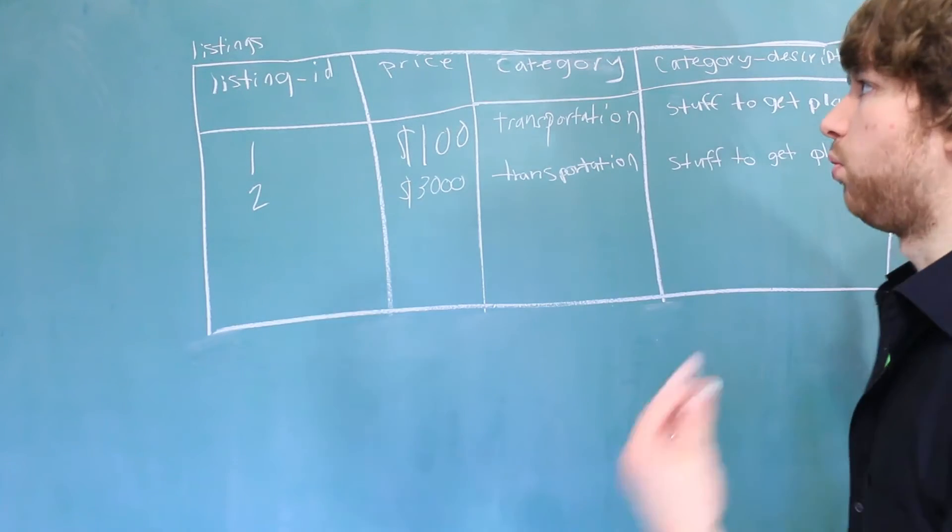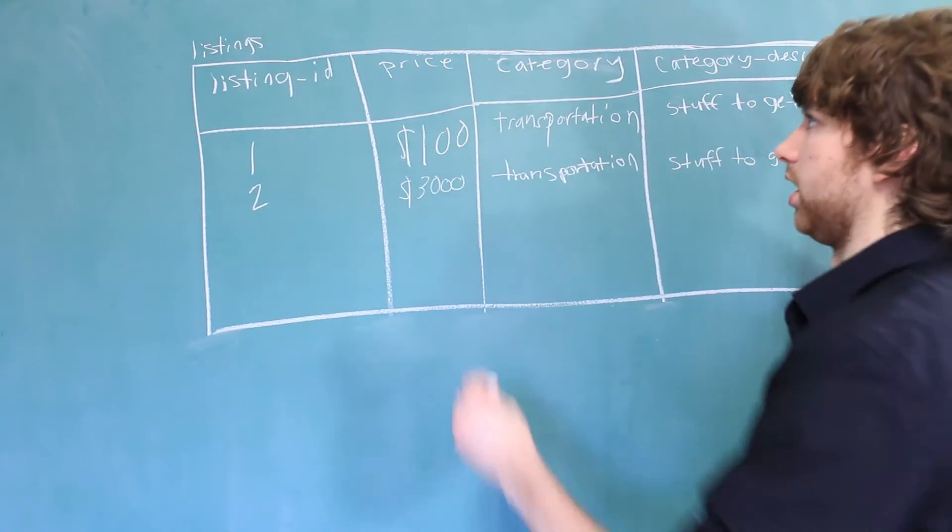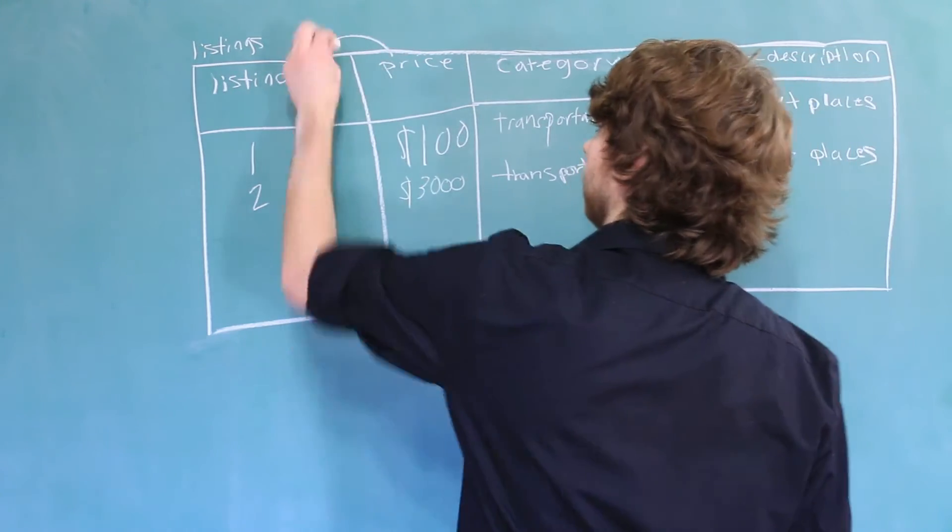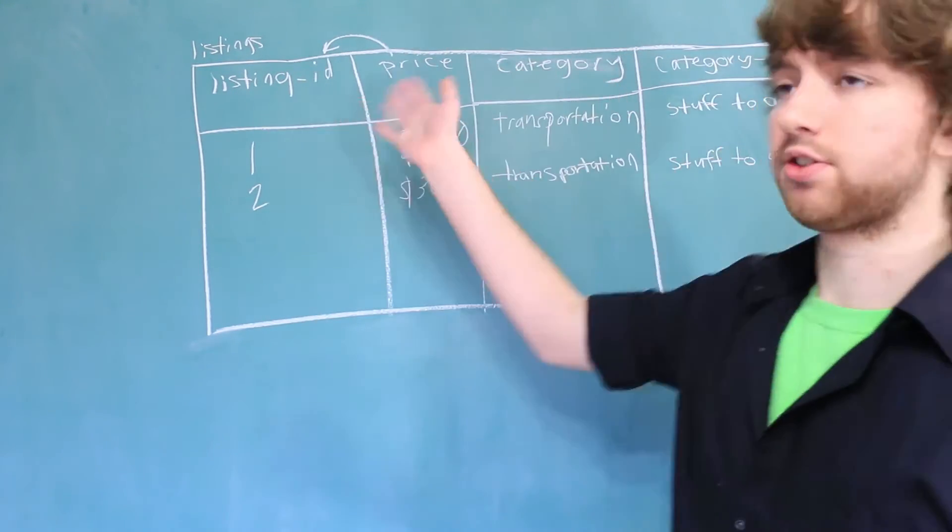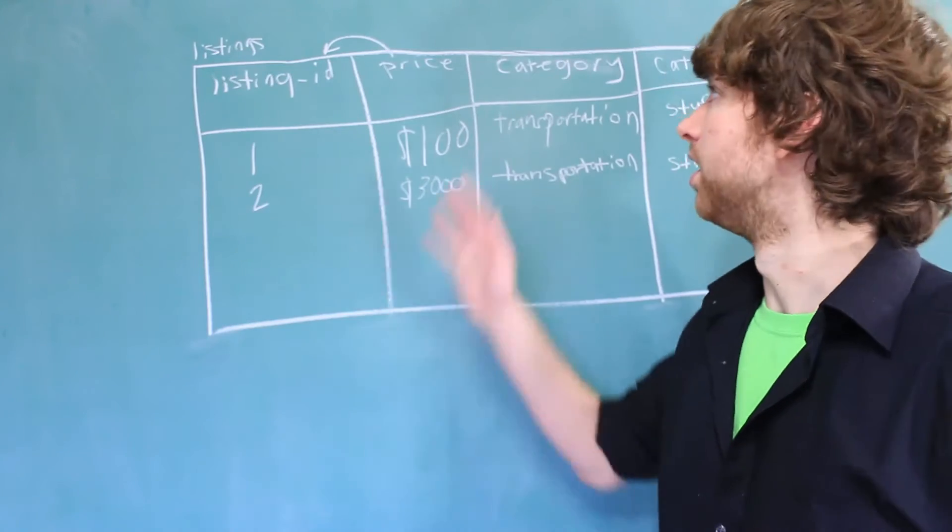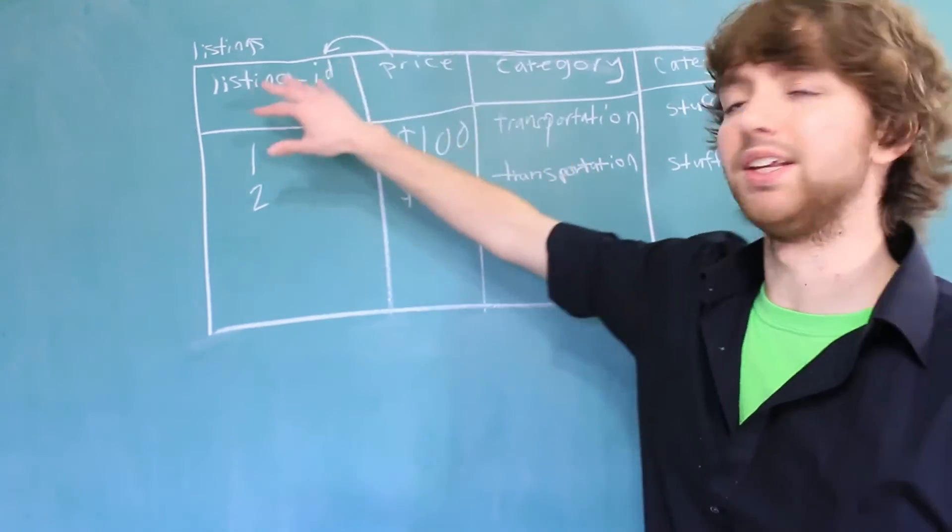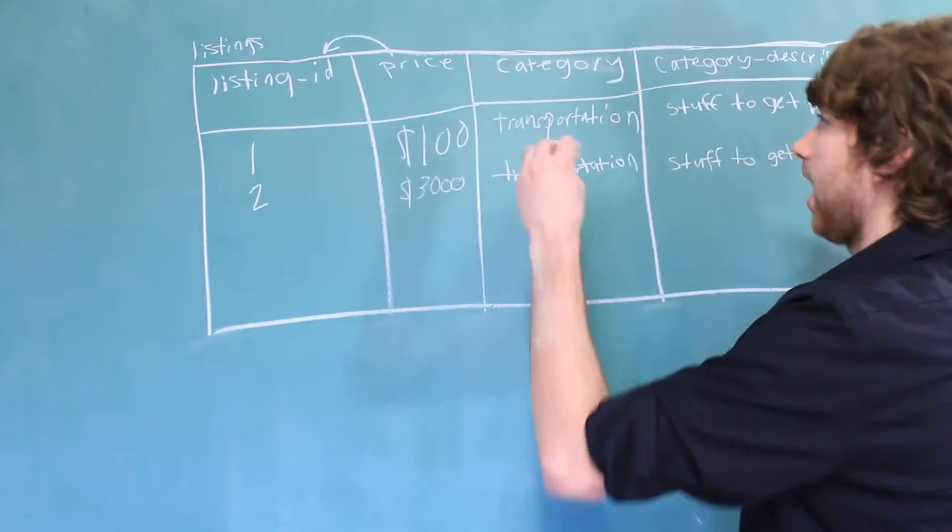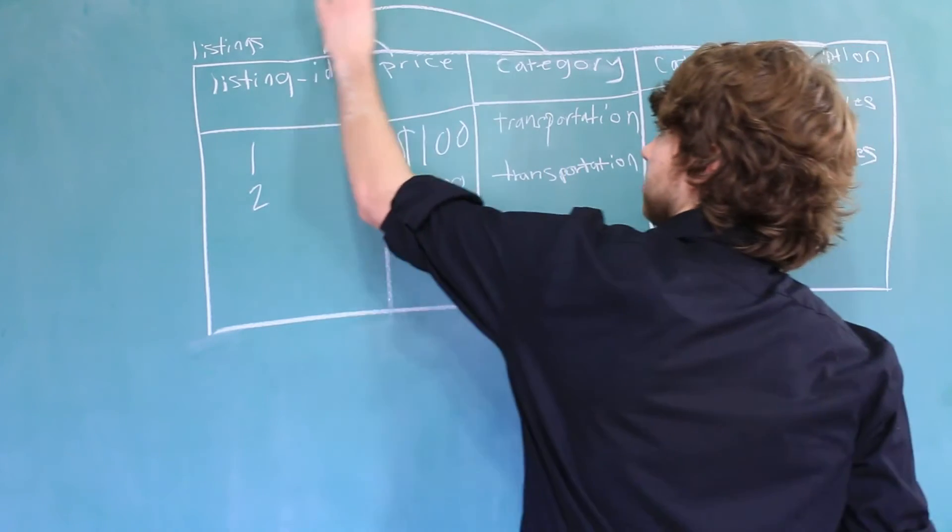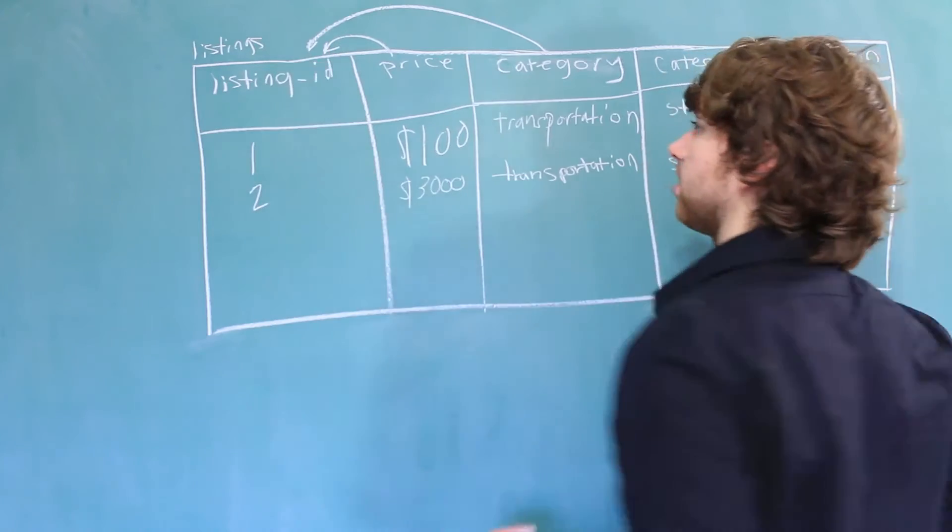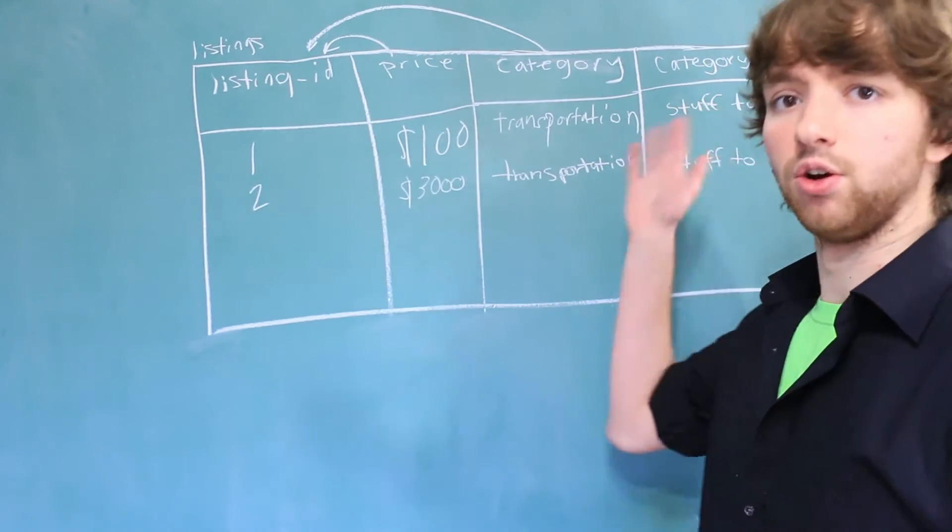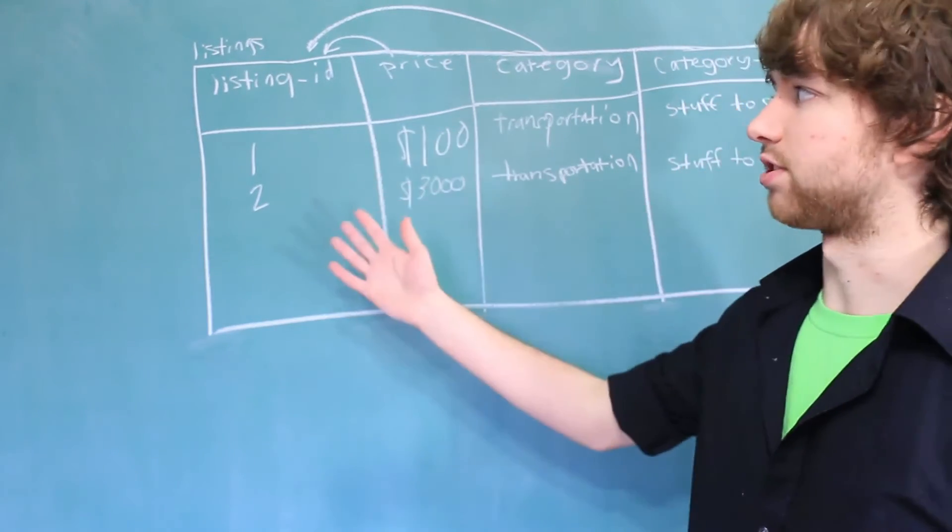Now let's talk about what columns depend on the primary key. The price depends on the primary key. Because if you were to change the listing ID, you're going to be talking about a different item. And the price will likely change. So this depends on what listing you're talking about. The category also depends on the listing ID. That's because every single item can have its own category. So if you change the listing ID, it'll be a new item and the category is able to change.